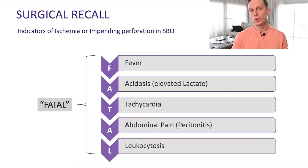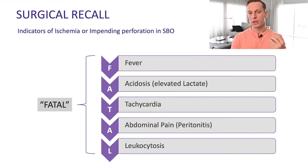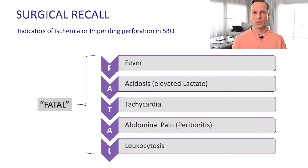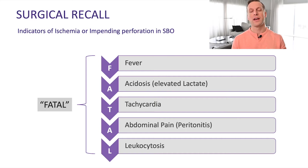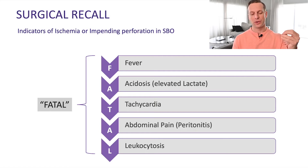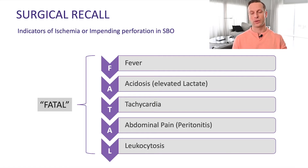In addition to X-rays, blood work is very useful. To help think about what tests you want to order for a patient with a small bowel obstruction, it's useful to use the FATAL acronym: Fever, Acidosis, Tachycardia, Abdominal pain, and Leukocytosis.